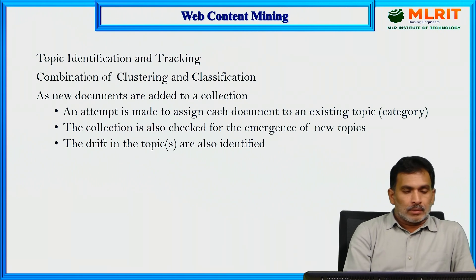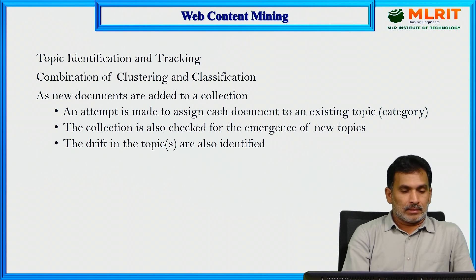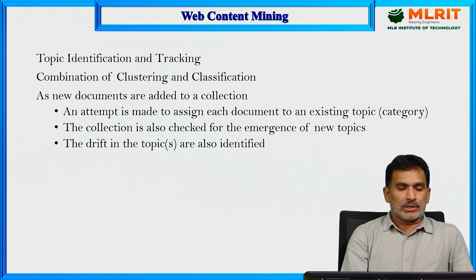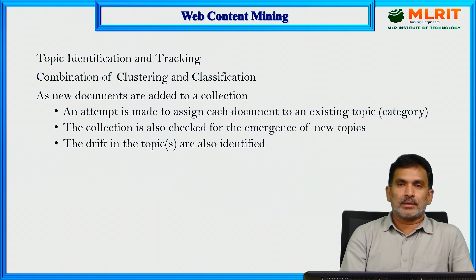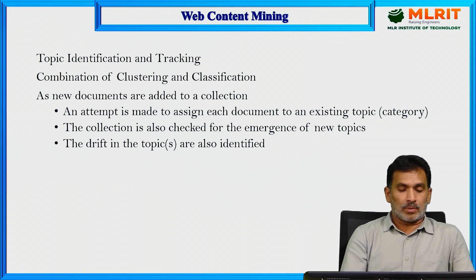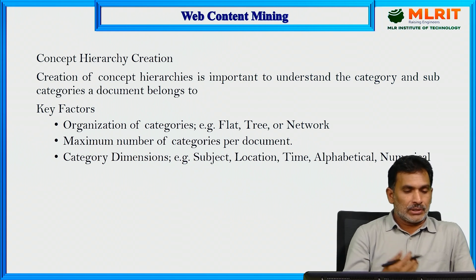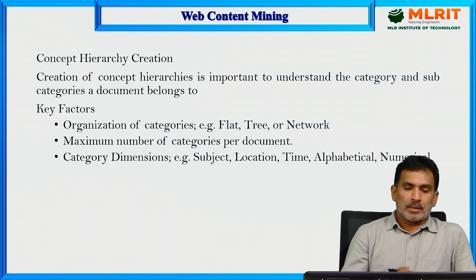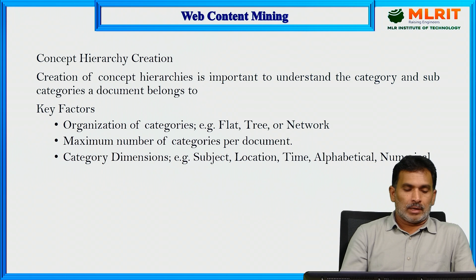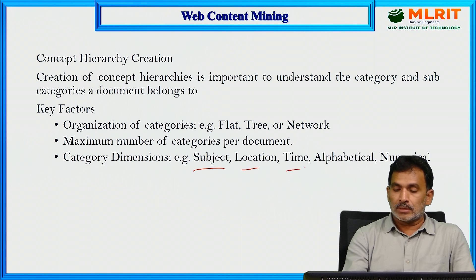Topic identification and tracking uses a combination of clustering and classification. As new documents are added to the collection, an attempt is made to assign each document to an existing topic or category. The collection is also checked for the emergence of new topics and drift in topics. Concept hierarchy creation involves creating hierarchies to understand the categories and subcategories a document belongs to, including organization of categories as flat structures, trees, or networks, with dimensions such as subject, location, time, alphabetical, and numerical.